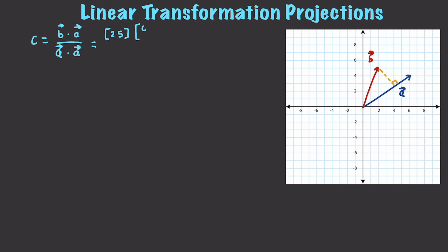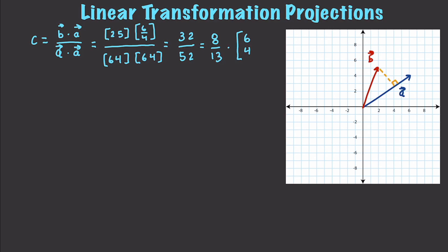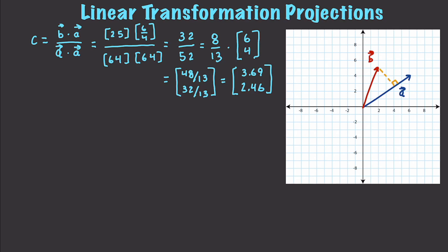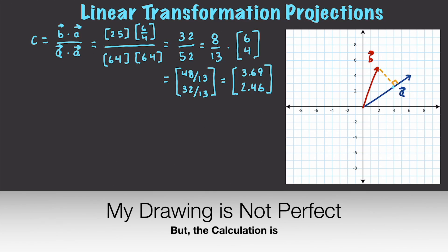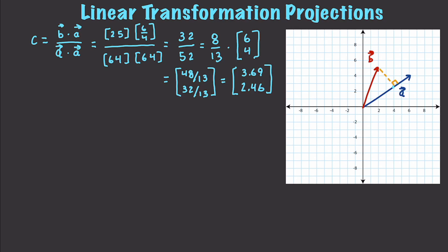So we compute (2,5)·(6,4) over (6,4)·(6,4), which gives us 32 over 52, simplifying to 8 over 13. Multiplying this scalar by vector A — (6, 4) — gives us (48/13, 32/13), approximately equal to (3.69, 2.46). Looking at the graph, that point does appear to land right at roughly 3.69 and 2.46.